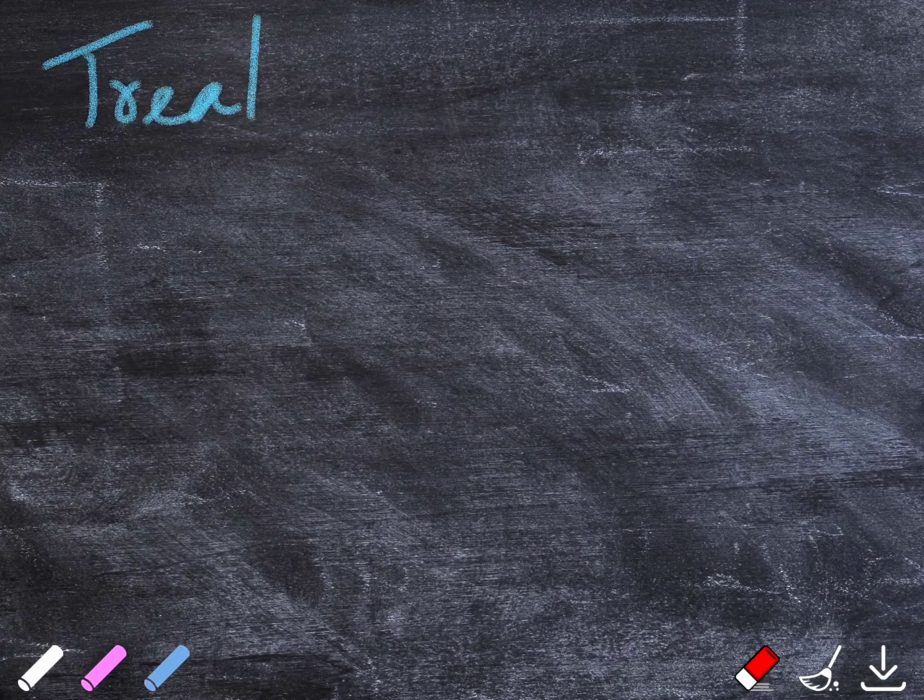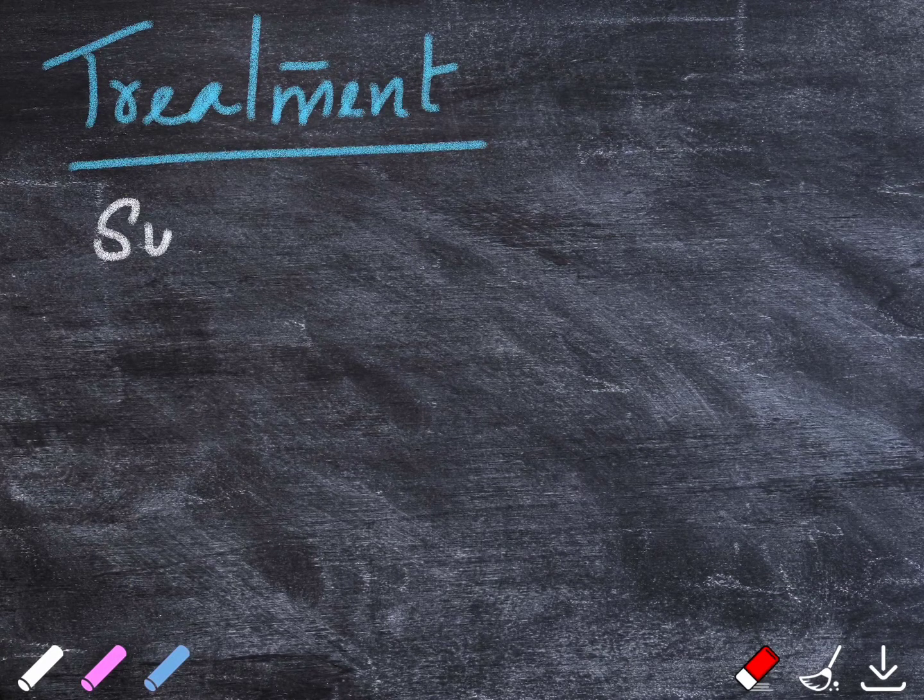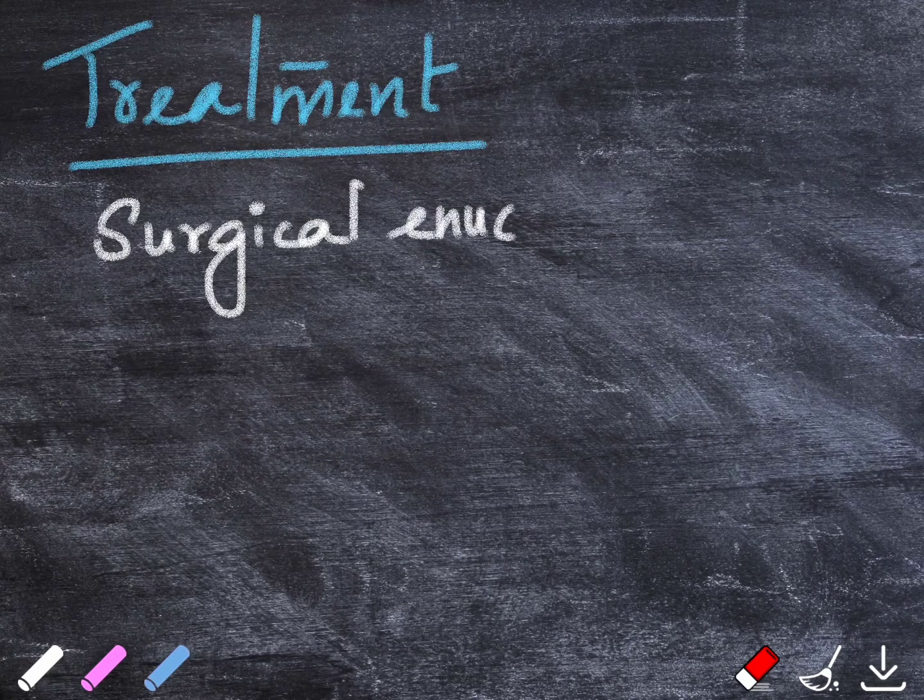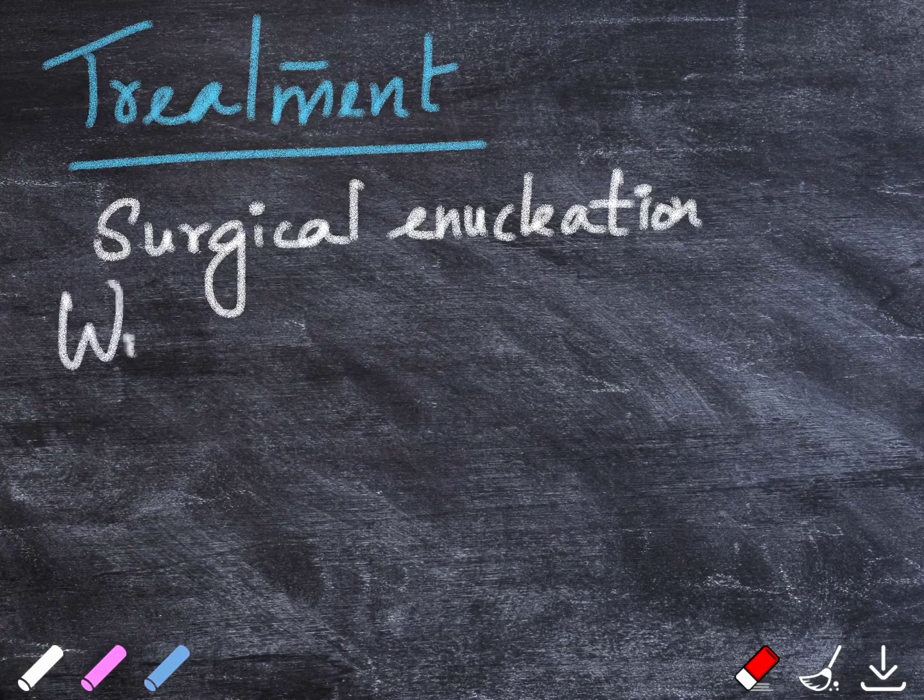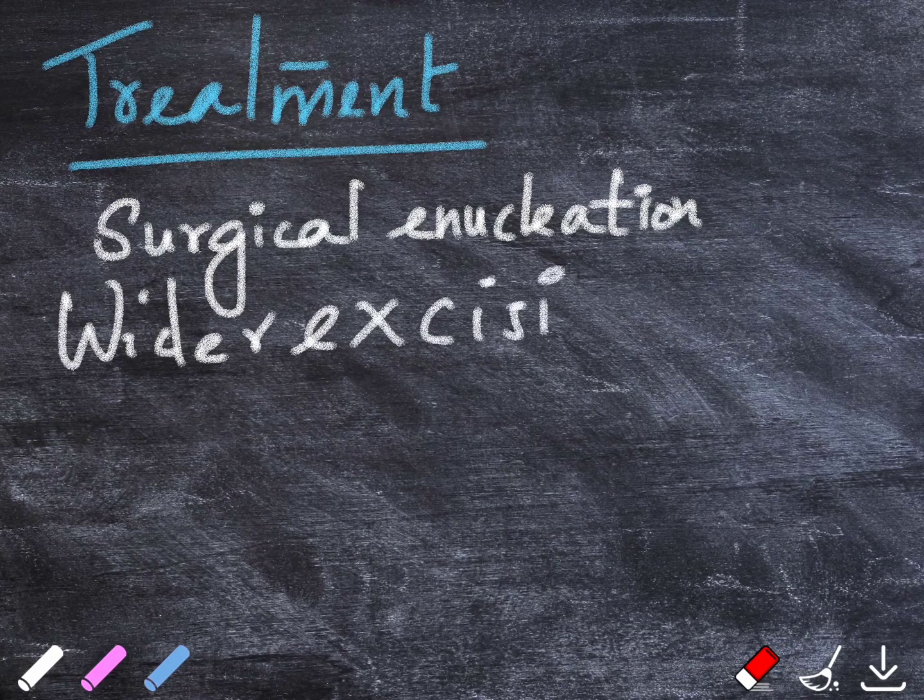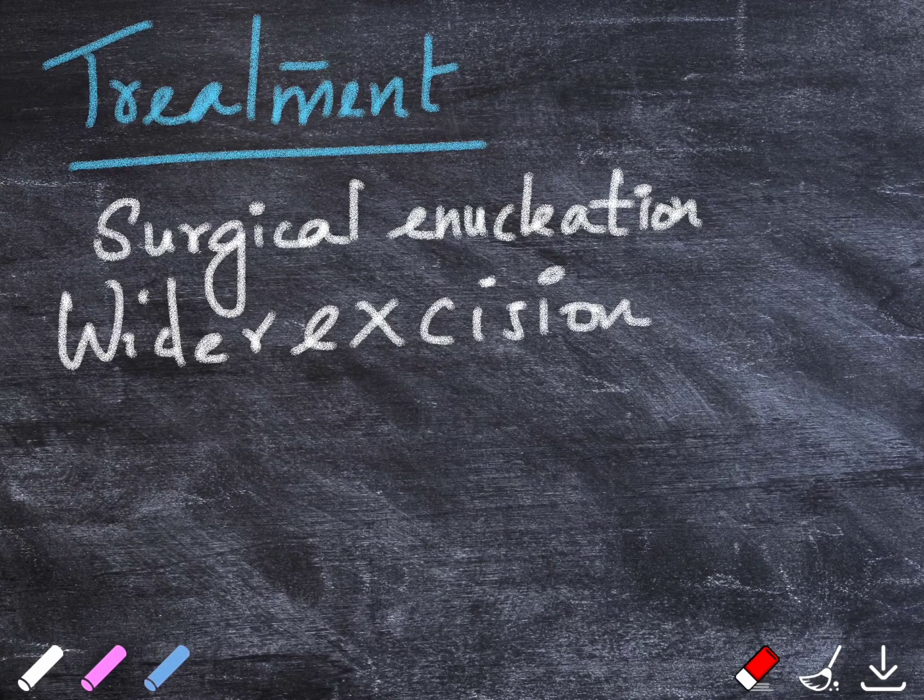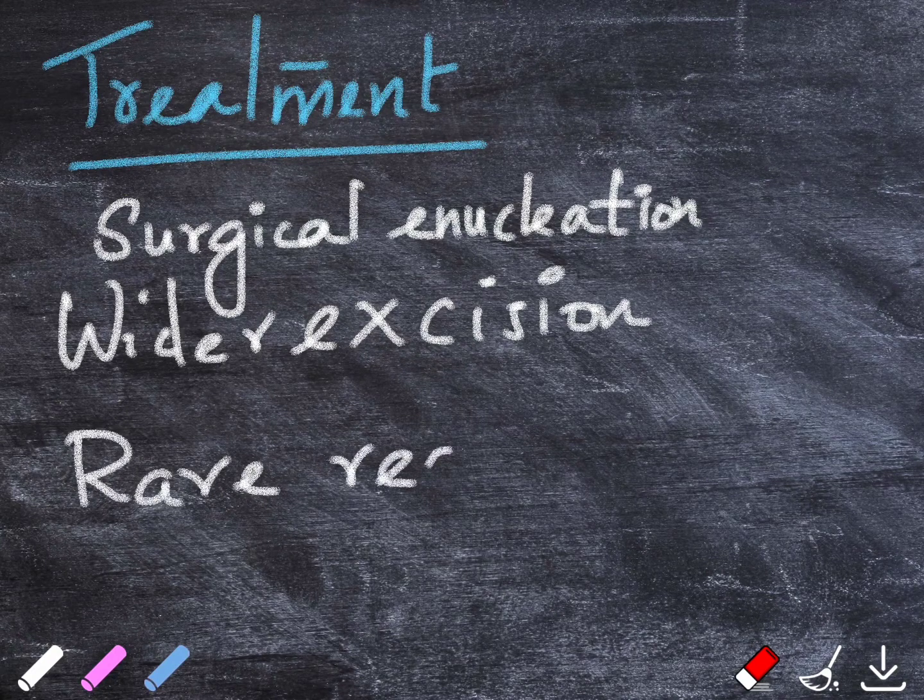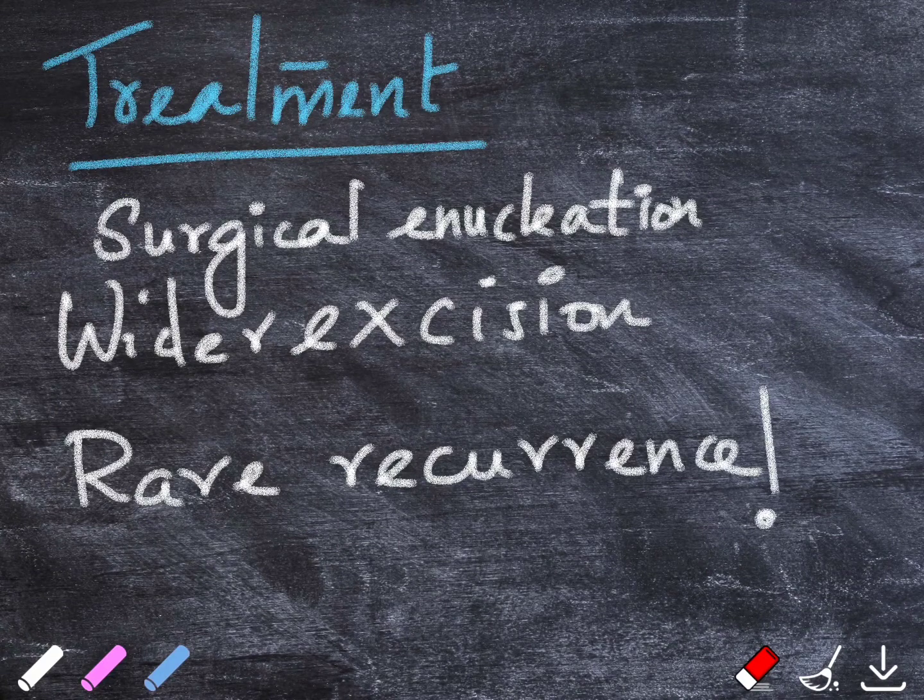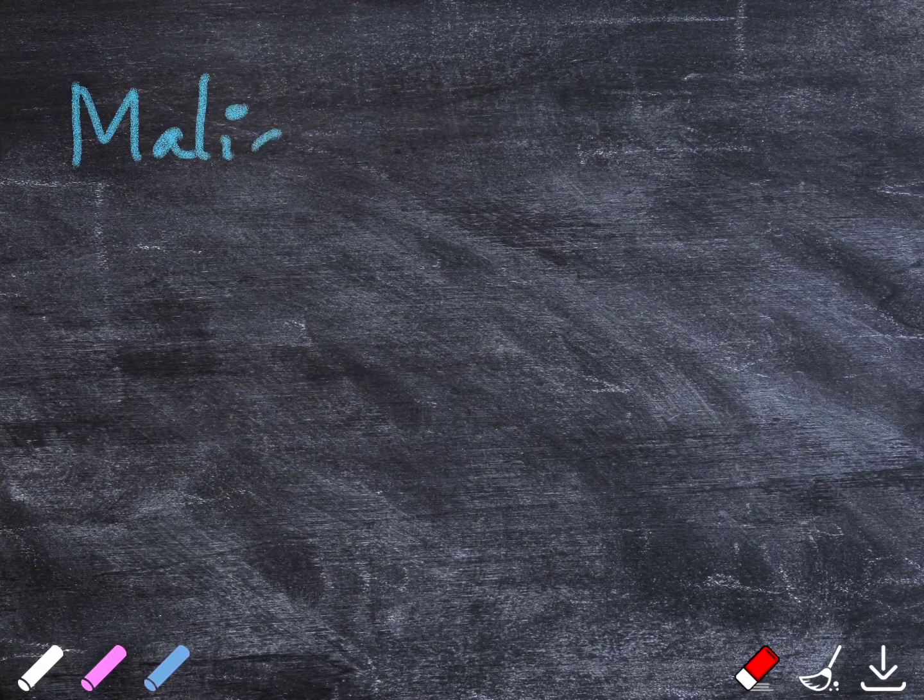Moving on to the treatment aspects. Conventionally, COC is treated by surgical enucleation. This treatment modality has to be changed when there is an associated odontogenic tumor, in which case wider excision is preferred. Conservative removal is preferred when there is a complex odontoma associated. Recurrence is very rare even when the lesion has reached a very large size. When excision or enucleation is done, it's more than enough.